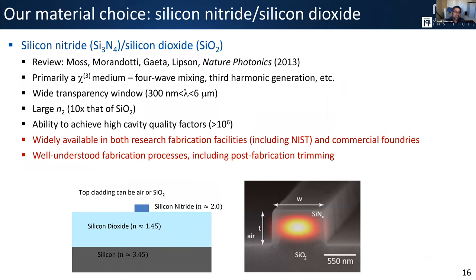What we work on is silicon nitride grown on silicon dioxide on a silicon substrate. This is a very popular medium for nonlinear nanophotonics. It's primarily a chi-3 medium, so we're talking about four-wave mixing processes. We like it because it has a broad transparency window from the visible out to maybe the mid-IR, a pretty large nonlinear refractive index, and you can get high cavity quality factors across a broad range of wavelengths. Two of the things we care about most are that it's a widely available platform — both in research fabrication facilities like the one at NIST and in commercial foundries — and that the fabrication processes are relatively well understood, making it transferable to others within the community.